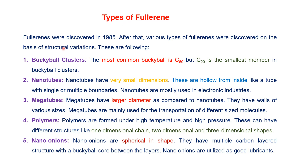Types of philorene: Philorenes were discovered in 1985, and after their discovery various types were identified based on structural variation. The first type is buckyball clusters. This is the most common type of philorene, and the most common among these is C60, while C20 is the smallest member of the buckyball cluster.